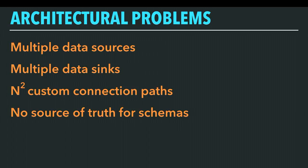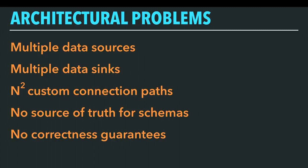This is compounded by the fact that there is no single source of truth for schemas. So changing data types or adding columns was risky and requires manual work to verify that things are working correctly. And finally, there was no way to guarantee that all the data was correct in all the places it was supposed to appear — network failures, host failures, even programming errors can manifest as data being wrong in one place or another.